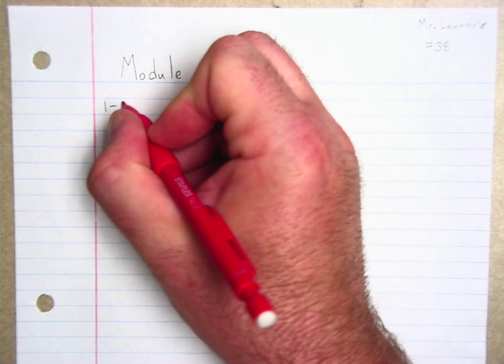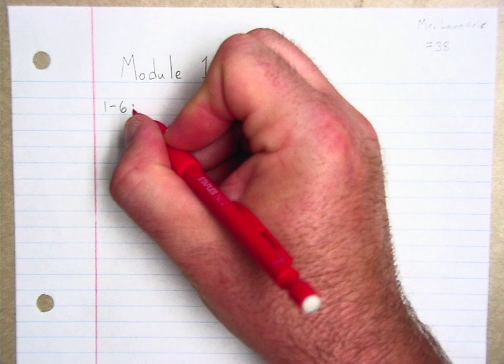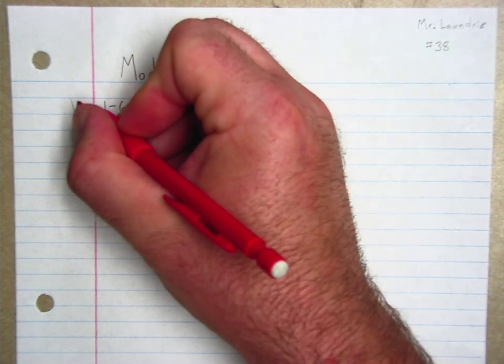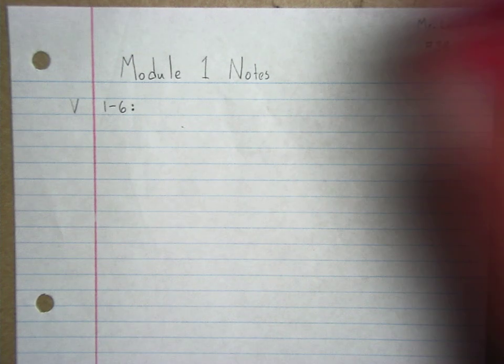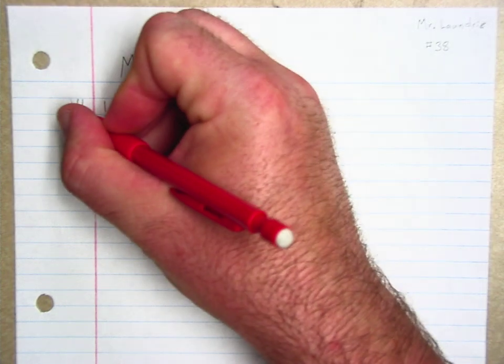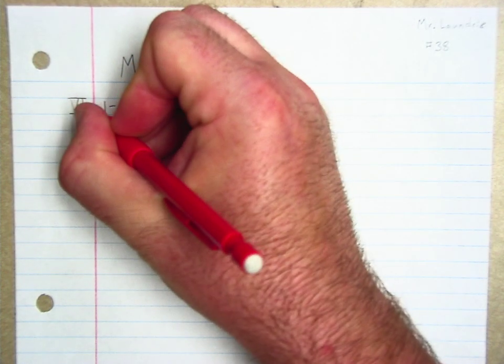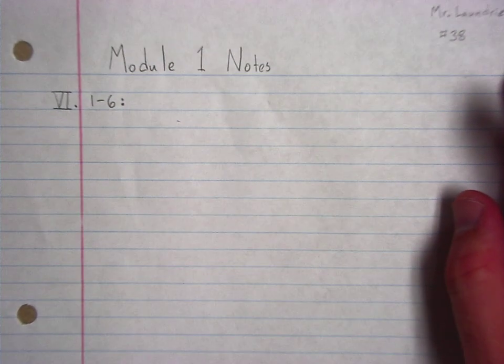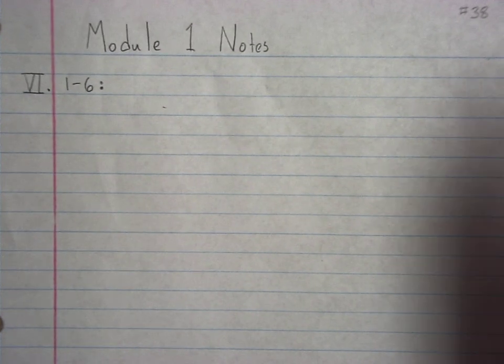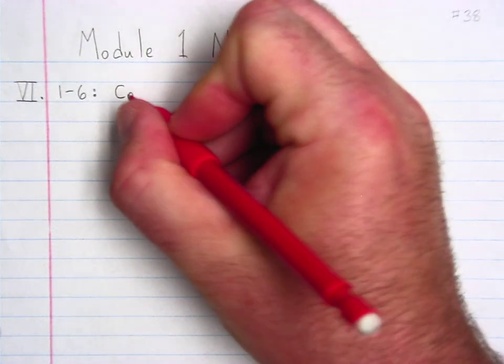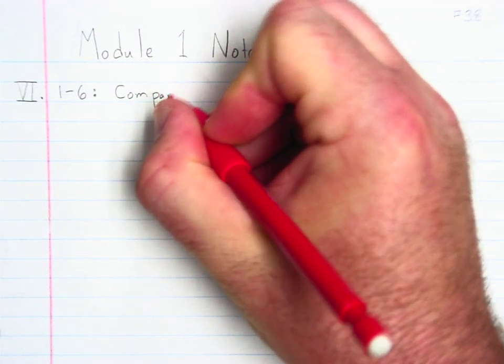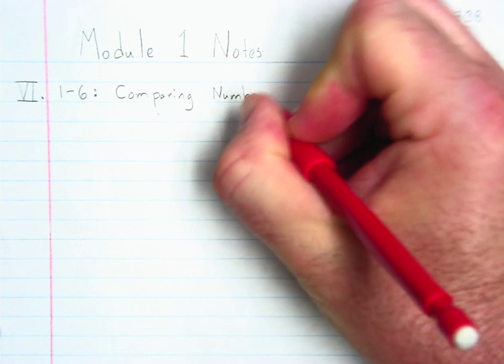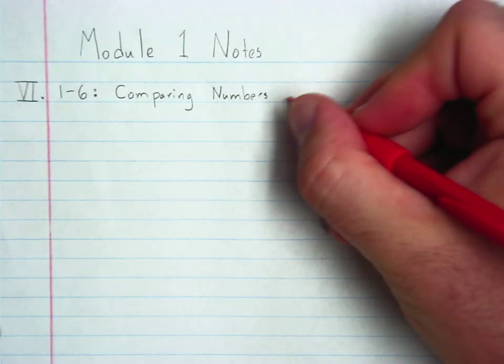Okay, we are going to be moving on to Module 1, Lesson 6 today, which means our Roman numeral is going to be a 5 plus 1. So VI makes a Roman numeral 6, and the title of the lesson is going to be Comparing Numbers with Place Value.